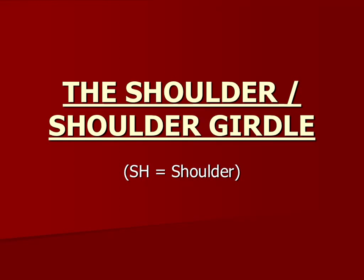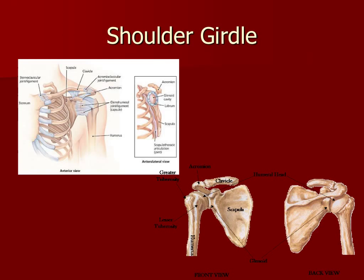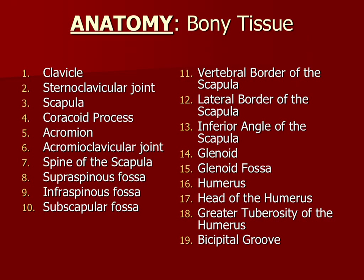Welcome to the shoulder and shoulder girdle. As you can see from these images, we have an anterior-posterior shoulder on the bottom right and an anterior view on the top left. Some of the major points of bony tissue can be found on this third slide. Please identify items 1 through 19 on the images utilized in slide number 2.